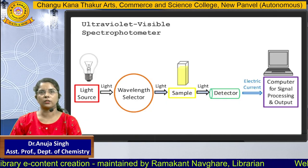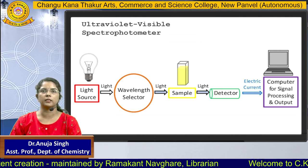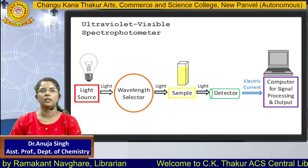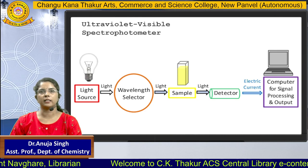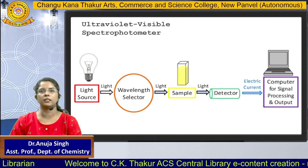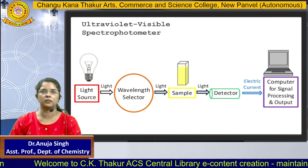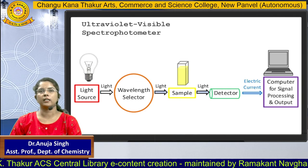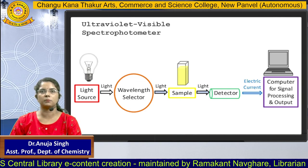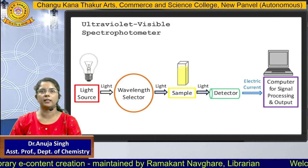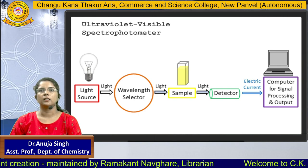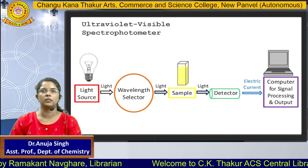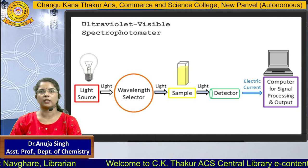This is the instrumentation of a UV Visible spectrophotometer. Generally it comprises a light source from where we get the UV light, then a wavelength selector where we can select a particular wavelength at which we want to take the reading of our sample. The light then travels through the sample — some light is absorbed and the rest is transmitted. The transmitted light is detected by a detector, converted to electric current, and through the computer we can find the signal and calculate our result.